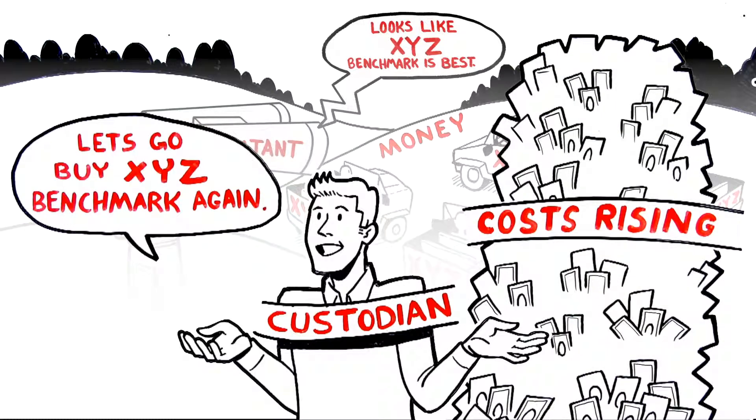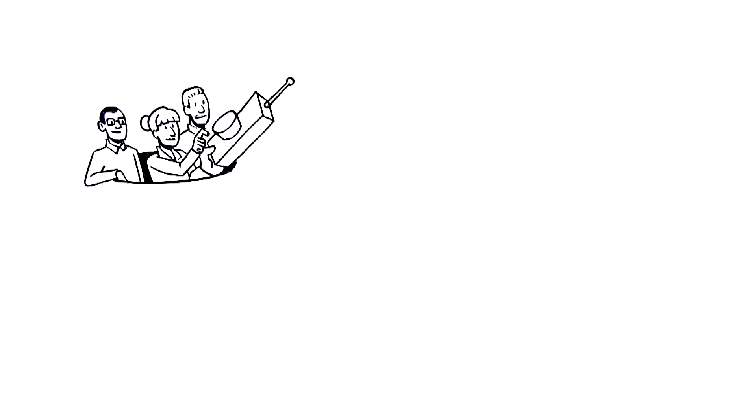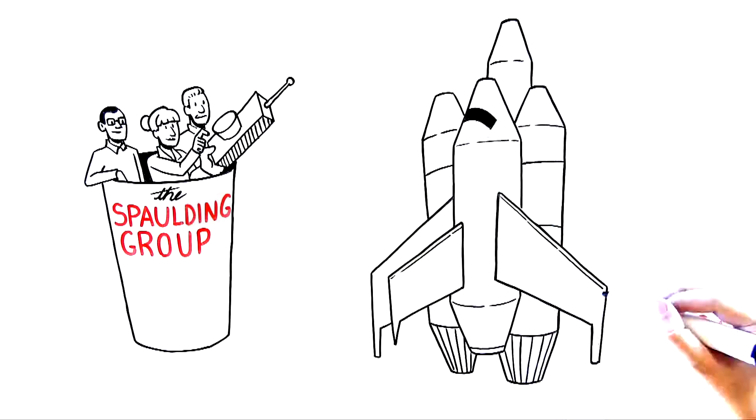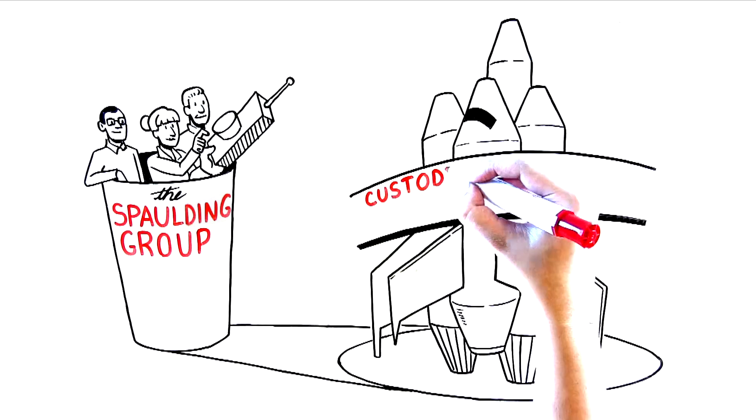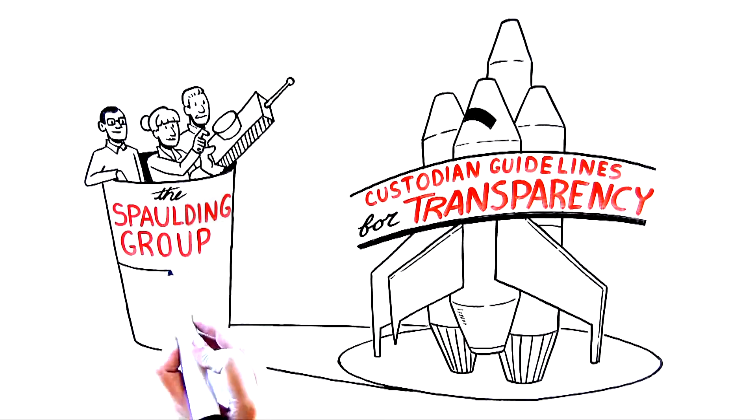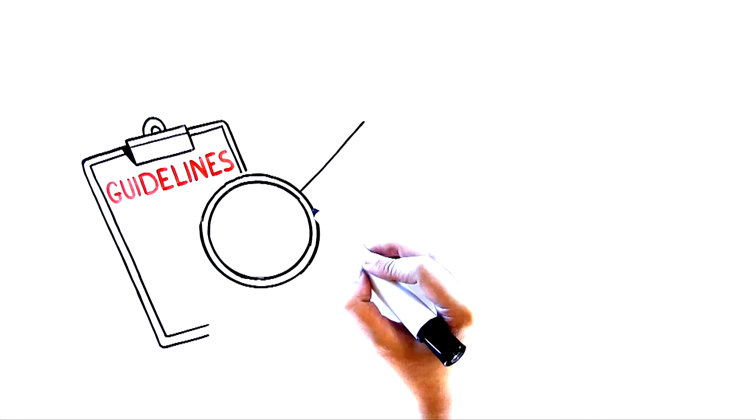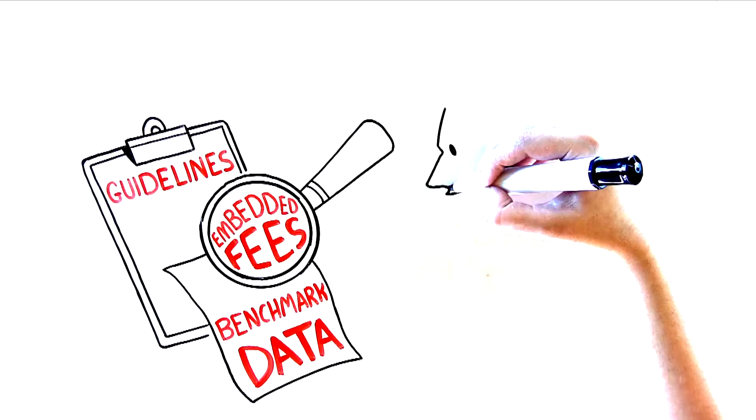That's how we've reached this tipping point. The Spalding Group, the leading performance measurement service firm in the money management industry, recently announced the launch of the Custodian Guidelines for Transparency and Benchmark Cost in partnership with a number of major custodians. The guidelines were developed with the goal to improve transparency on embedded fees for benchmark data and enable investors to make informed decisions by understanding the details behind the fees they're paying.